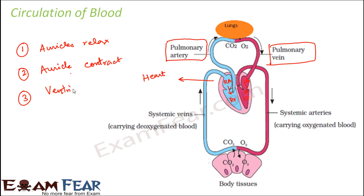In the third step, the ventricles contract. When the auricles had contracted, the ventricles were in a relaxed state, receiving the blood from the auricles. Now when the ventricles contract, they pump the blood outside — the right ventricle pumps blood to the lungs, and the left ventricle pumps blood through the arteries to different parts of the body. Due to this contraction and relaxation of the auricles and ventricles, we feel the heartbeat — the rhythmic movement you can feel near your heart as blood moves through it.